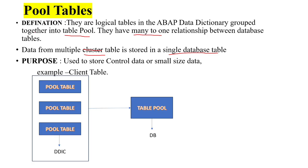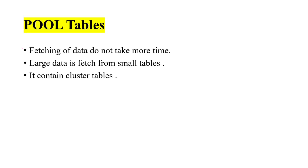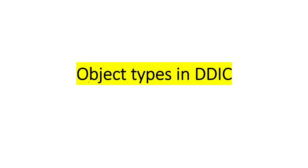One example of pool tables is client tables. In pool tables, fetching data does not take more time and a large number of records can be fetched from small tables. A pool table can also contain cluster tables. This is all about the different types of tables. In the next lecture we are going to see object types in the Data Dictionary.